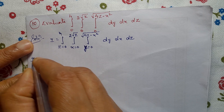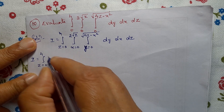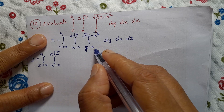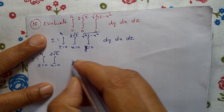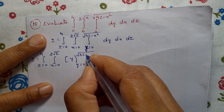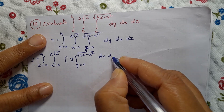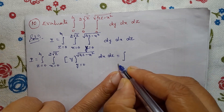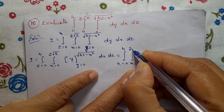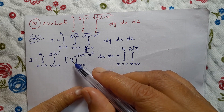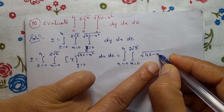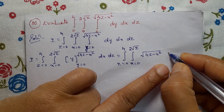So I = integral z = 0 to 4, integral x = 0 to 2√z. Integrating with respect to y, the inner integral of dy from y = 0 to √(4z − x²) gives y evaluated at those limits: upper limit √(4z − x²) minus lower limit 0. So we get √(4z − x²) dx dz.